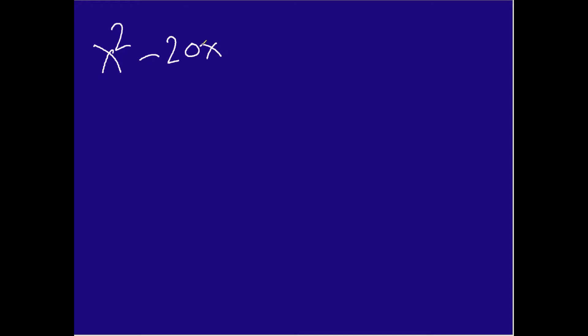Let's say here that you have the following: x squared minus 20x. Here's what we need to do — this is the secret to dealing with these types of expressions. You take the b term, which is our coefficient 20, and this is what you do.